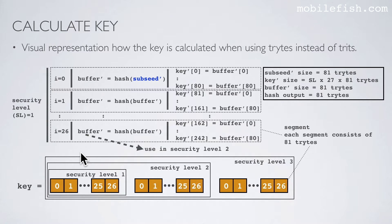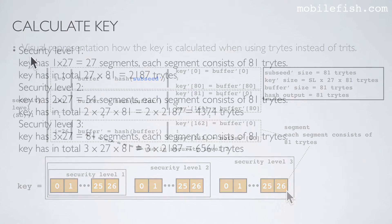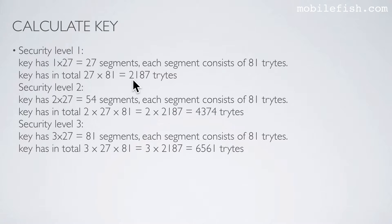Here is a simplified explanation using trits. You have the sub-seed in trits — you hash it and assign it to the buffer array, also in trits. You assign the buffer array to the key array. Each rectangle is called a segment and each segment consists of 81 trits. If you use security level 1, the key consists of 27 segments of 81 trits. Security level 2 gives 27 plus another 27 segments. Security level 3 gives 27, another 27, and another 27 segments. In total: security level 1 gives 2,187 trits; security level 2 gives 4,374 trits; and security level 3 gives 6,561 trits.